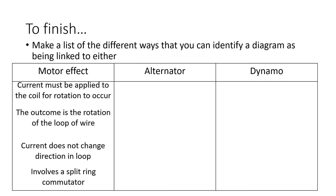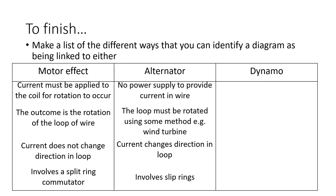In terms of the motor effect: we must have a current supplied; the outcome is the rotation of the wire; the current does not change direction; and there is a split ring commutator involved. In terms of alternators: there is no power supply to provide a current; the loop must be rotated by some method, for example a wind turbine or wave machine; the current changes direction in the loop, going one way and then reversing; and we have slip rings instead of a split ring commutator.